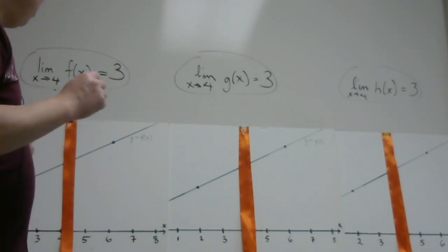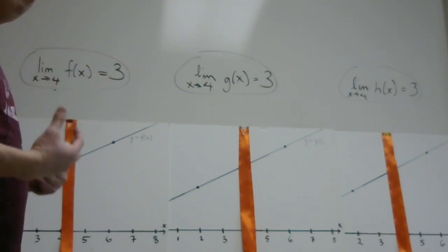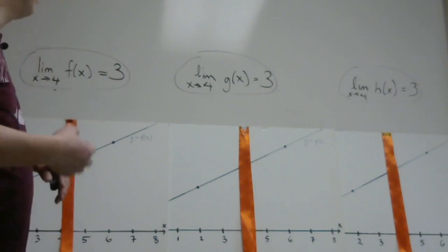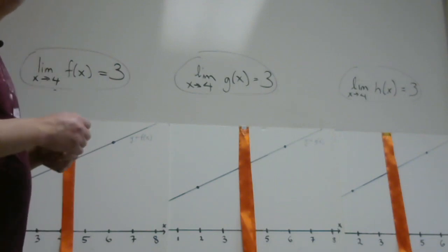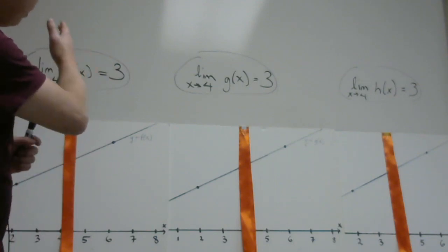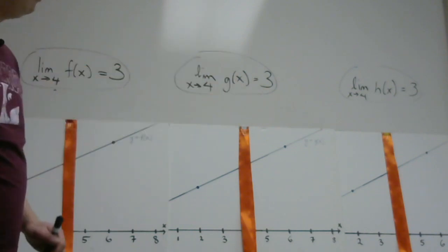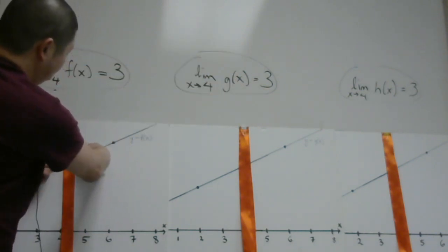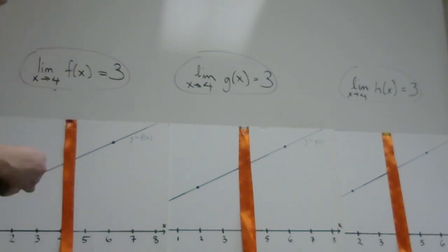If you look at points on the graph, as the x-value gets closer and closer and closer to 4, what would we predict the y-value to be? And that should, in all three of these cases, should be that as we move in, we should predict that the y-value would be 3.